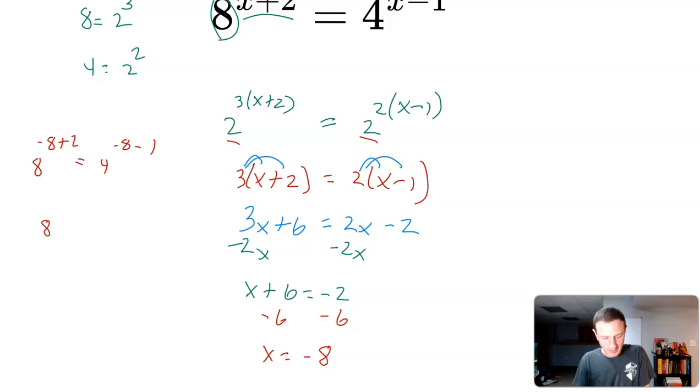So this is going to be 8 to the negative 6 equals 4 to the negative 9. So I have 8 to the negative 6 and 4 to the negative 9. We get the same thing.